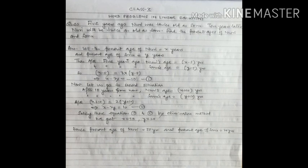So the present age of Noori is x = 50 years, and the present age of Sonu is y = 20 years. We have discussed two important questions from the assignment work. I hope all of you will do these questions, and if you are not able to solve any of the problems, ask me in the WhatsApp group. Thank you.